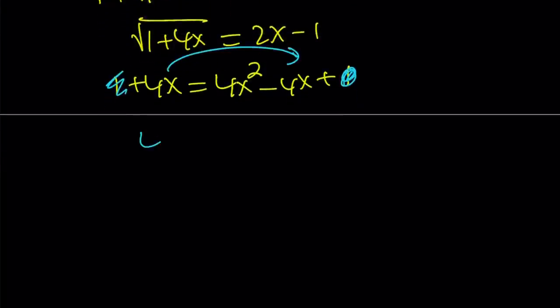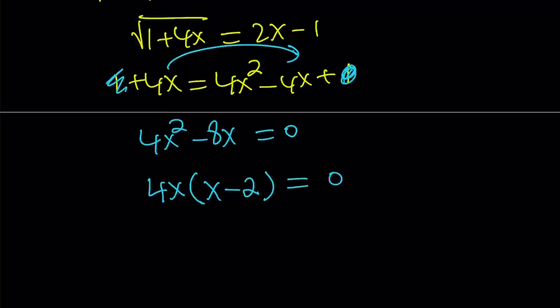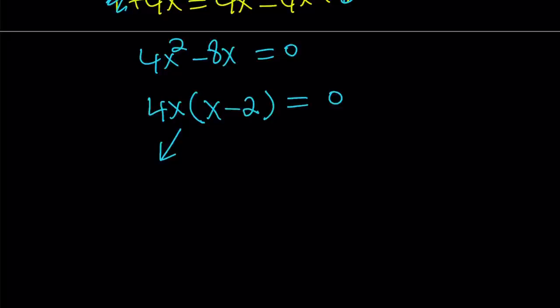Bring the 4x over and we get 4x squared minus 8x is equal to 0. Awesome. And now I can go ahead and take out 4x here. And I get x minus 2 equals 0. And obviously, this equation has two solutions. x equals 0 is going to work. It worked in the finite case. It's also going to work in the infinite case because it just works. It's cool. And x equals 2 is another solution.